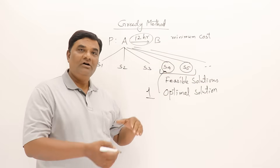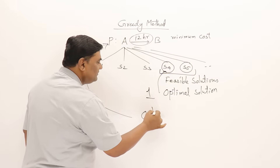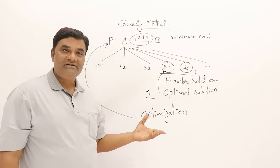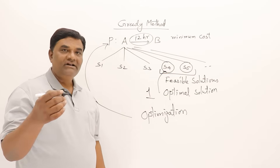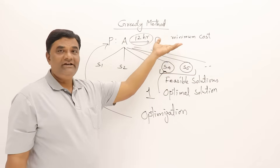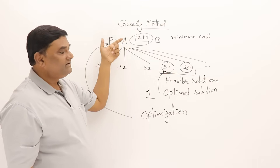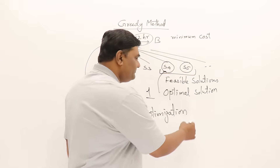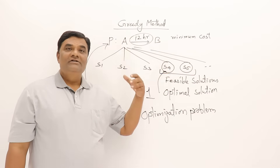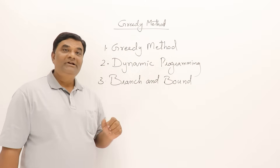Some problems may require a maximum result instead. If a problem requires either a minimum or maximum result, we call that type of problem an optimization problem. So briefly: feasible solution means a solution satisfying some constraint; optimal solution means achieving the objective — either minimum or maximum result. Greedy method is used for solving these optimization problems.